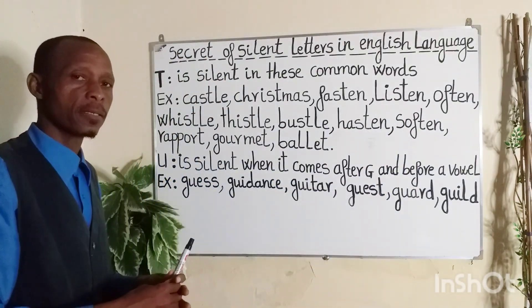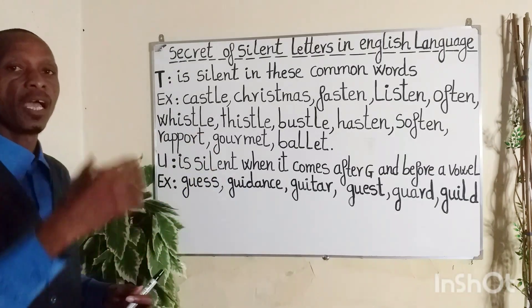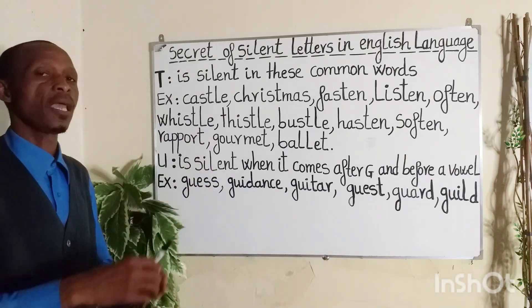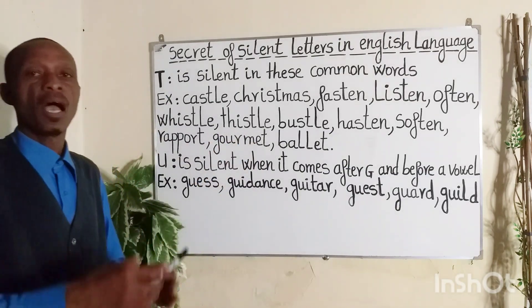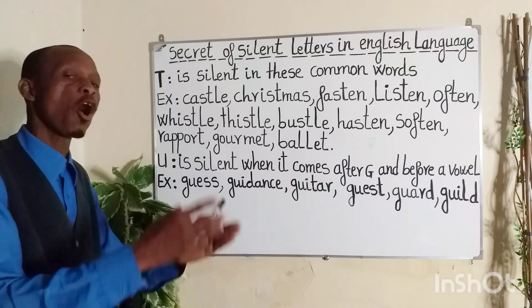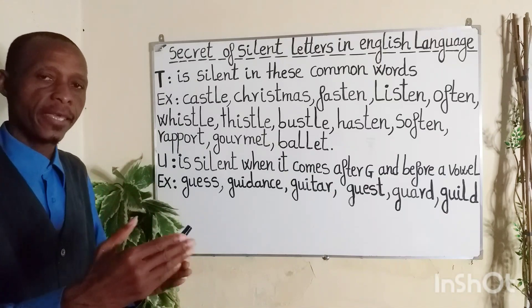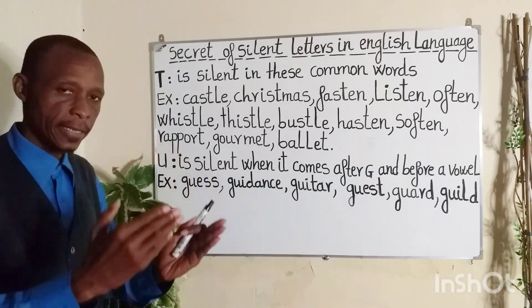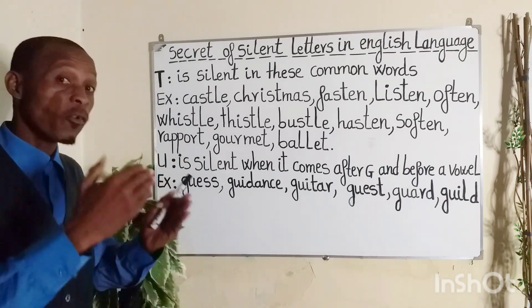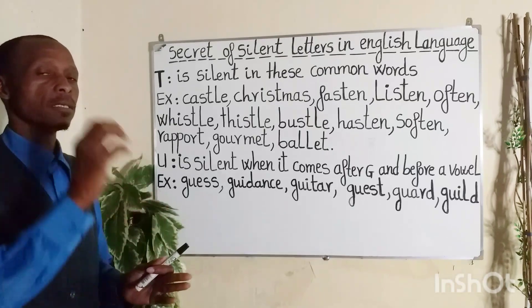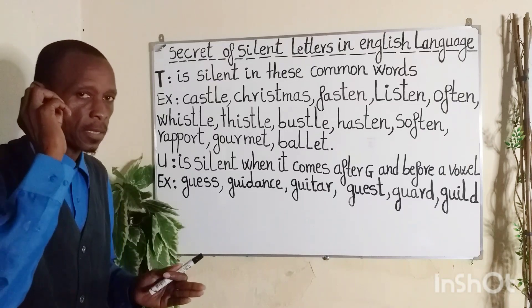Soften — which means to make something less hard. Rapport — a rapport is a close relationship with someone. Gourmet — a gourmet is a high quality of food or drink. Ballet — a ballet is a style of dancing that tells a dramatic story with music but no singing or talking.